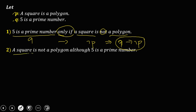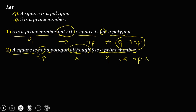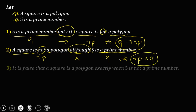For the next compound statement: 'a square is not a polygon although five is a prime number.' 'A square is not a polygon' is ¬p, 'although' indicates conjunction (∧), and 'five is a prime number' is q. So the symbolic form is ¬p ∧ q.